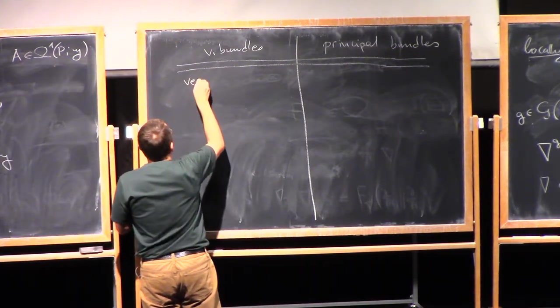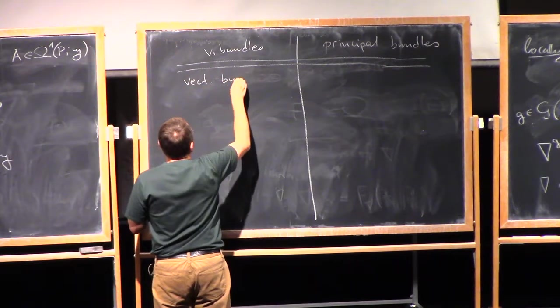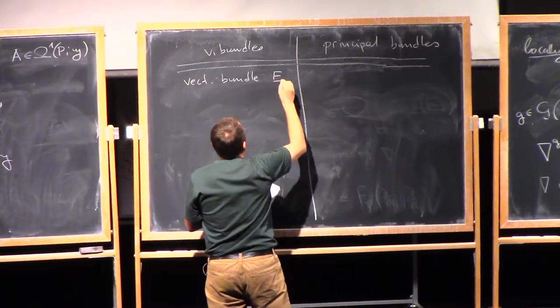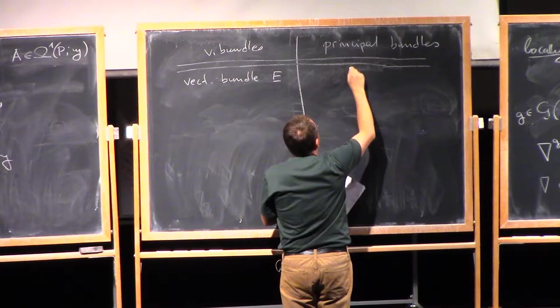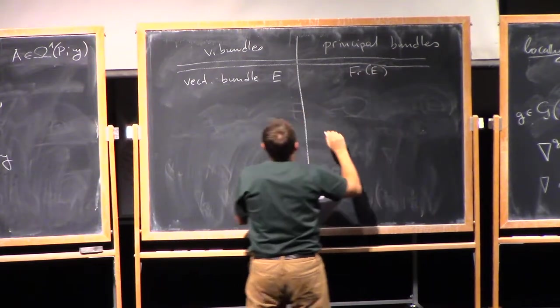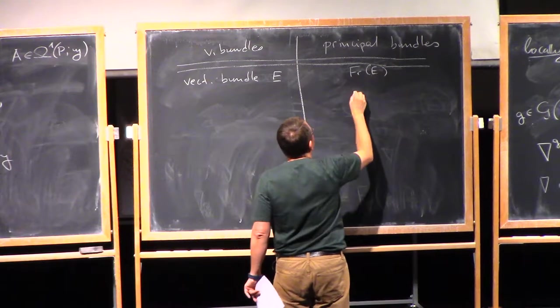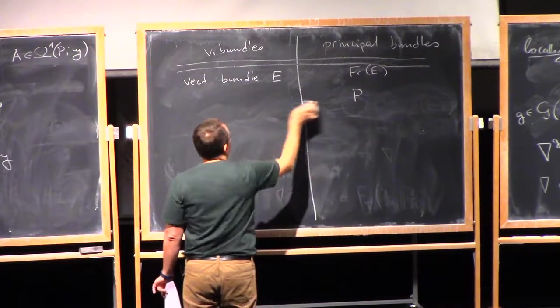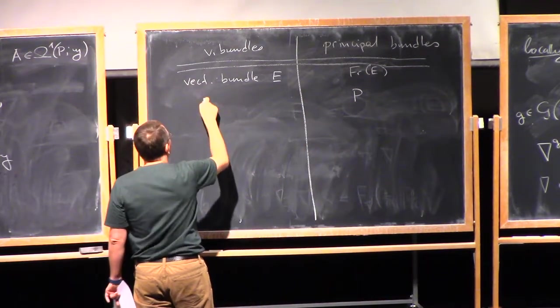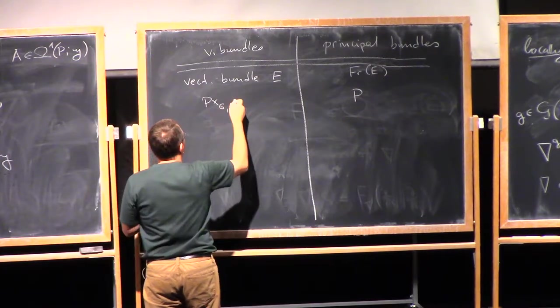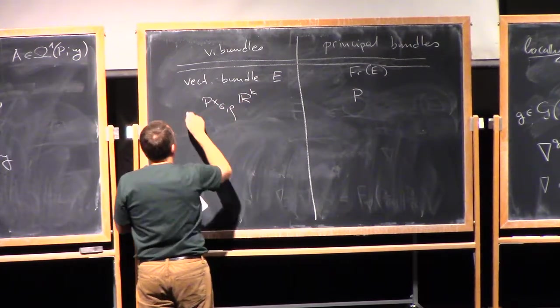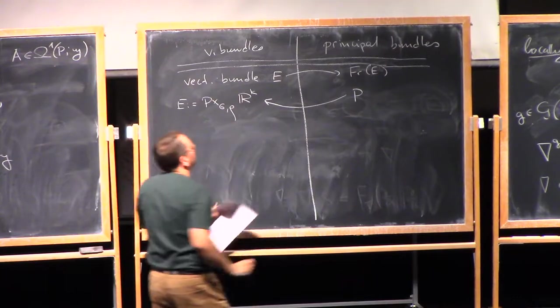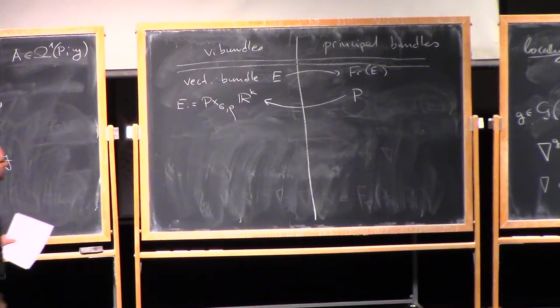As we have discussed already, if I have a vector bundle E, I can construct a principal bundle of frames of E. And in the other direction, if I have a principal G bundle P, I can construct an associated bundle P times_G rho R^K. This gives ways to go back and forth between principal and vector bundles.